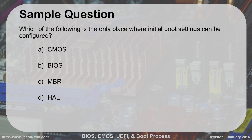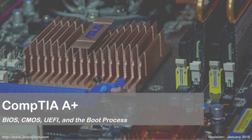So where is the only place where the initial boot settings can be configured? This is one that always trips students up. Is it the CMOS, the BIOS, the MBR, or the HAL? CMOS is the memory with the battery that stores settings. BIOS is the Basic Input Output System that does all the configurations — so that's the right answer. MBR is the master boot record, the piece on your hard drive that tells where all the files are and what gets booted. And HAL is from '2001: A Space Odyssey' — not the right answer. Knowing your acronyms is important. BIOS does the configuration; CMOS does the storage. And that is our BIOS, CMOS, UEFI, and boot process overview.